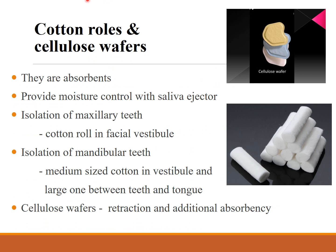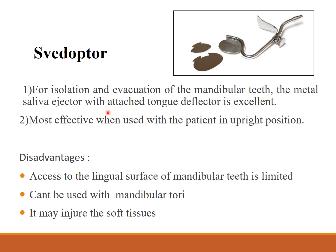Cotton rolls provide moisture control with a saliva ejector. For isolation of maxillary teeth, a cotton roll is placed in the facial vestibule. For mandibular teeth, a medium-sized cotton roll is placed in the vestibule and one large one between the teeth and tongue. Cellulose wafers can also act as retraction and provide additional absorbency.